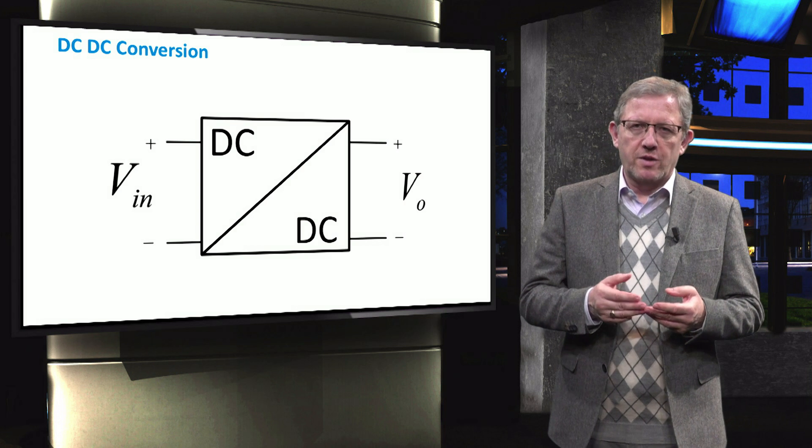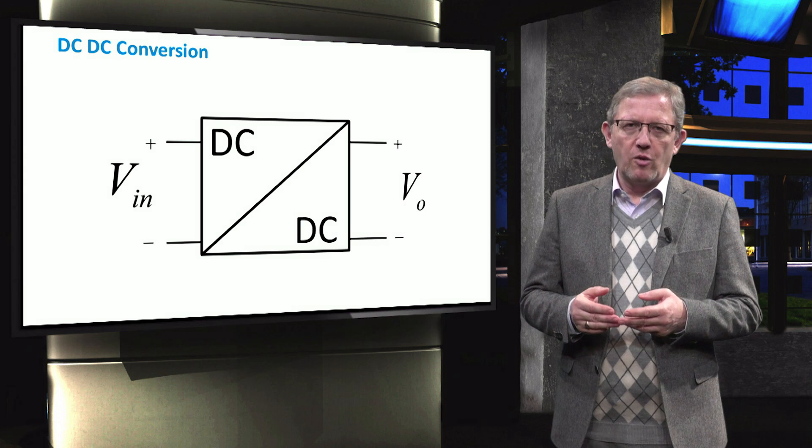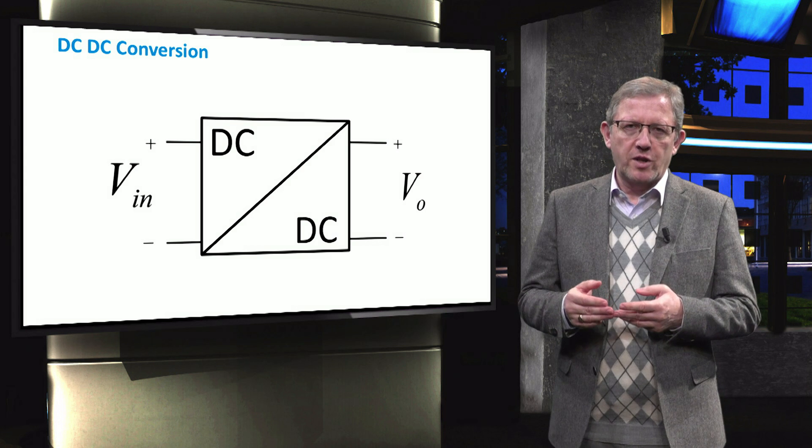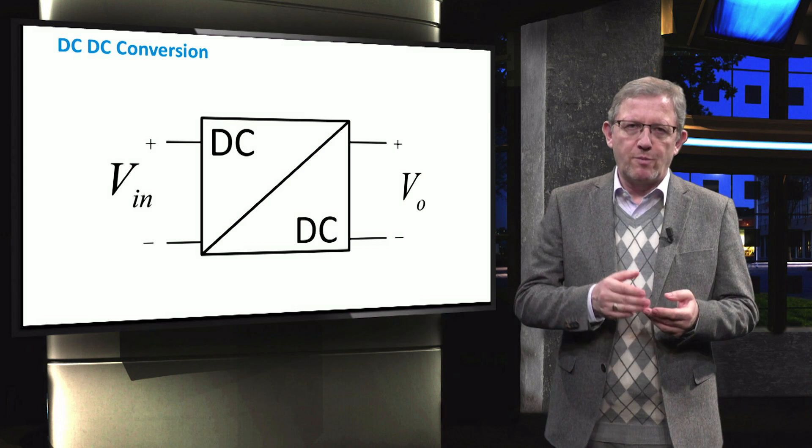Based on the input and output voltage ratio, we recognize the buck or step-down converter, where the output voltage is always lower than the input voltage.